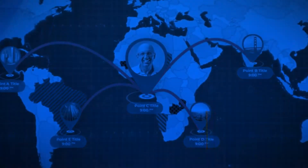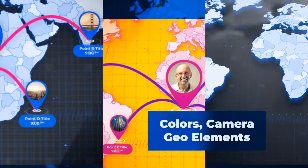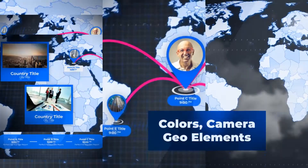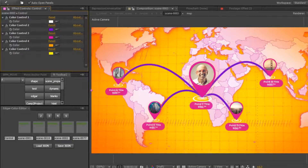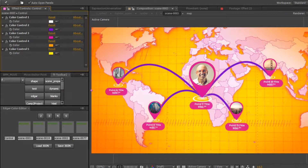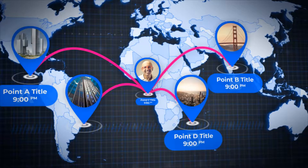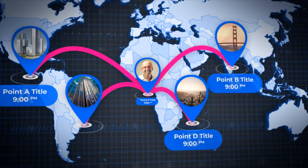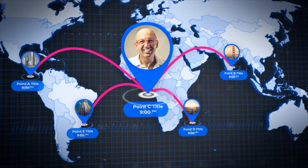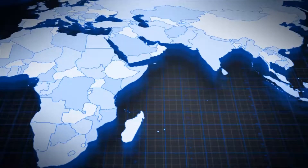Working with the template is easy because the project contains three types of settings. The first type allows you to customize the colors of the map individually for your design. The second type adjusts the position of geo marks and routes on the map. The third type controls camera movement over the map, so you can come closer to any point with ease.